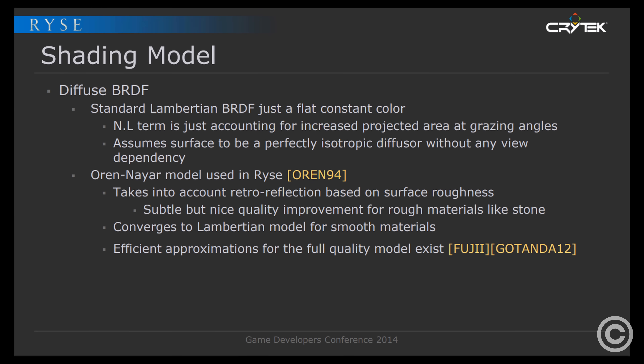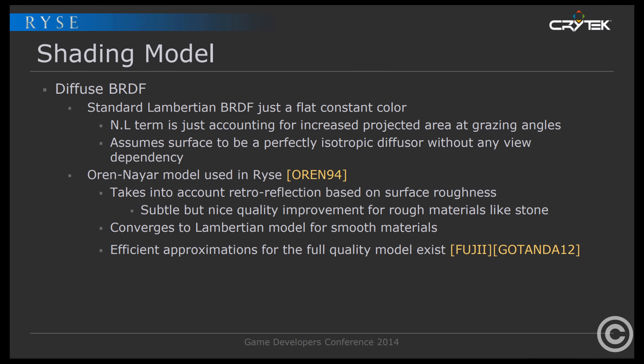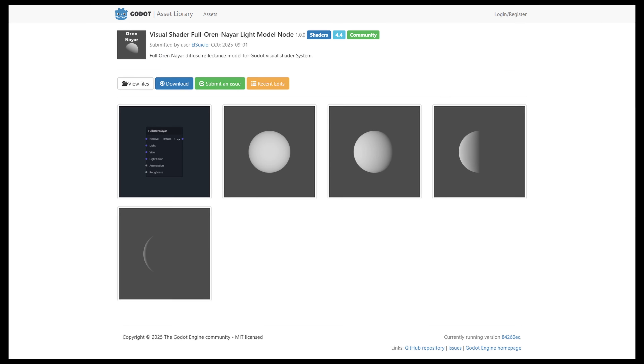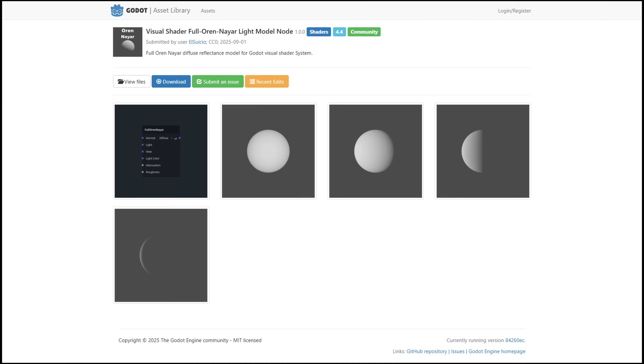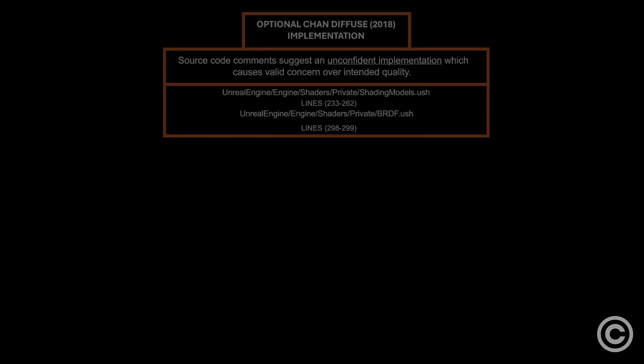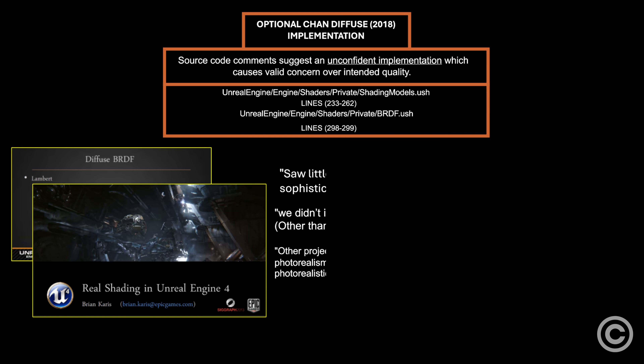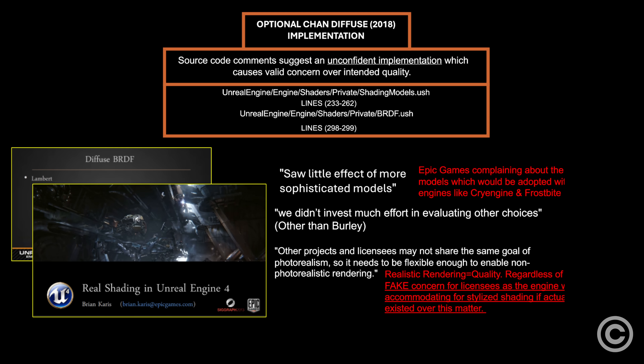Oren-Nayar was eventually used for diffuse lighting in Rise, Son of Rome, and Godot. While a self-admittedly low-effort implementation of the Chan diffuse model exists as an alternative to Unreal's default Lambert model, adopted in 2013, Unreal has been using the Lambert equation as their default diffuse model for at least 12 years.